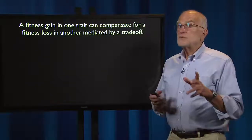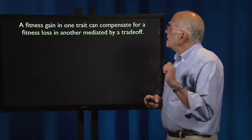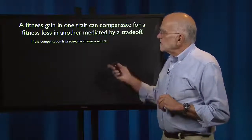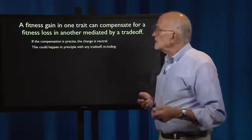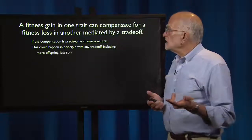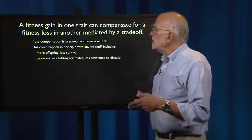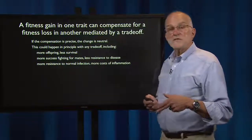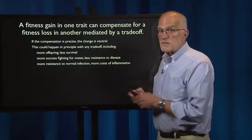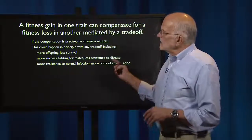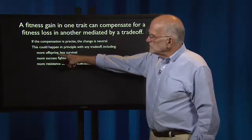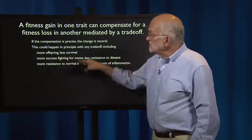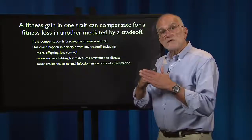Another reason for neutrality is that a fitness gain in one trait can compensate for a fitness loss in another if those traits are connected by a trade-off. If the compensation is precise, change will be neutral. This could happen with any trade-off, including more offspring vs. less survival, more success fighting for mates vs. less resistance to disease, or more resistance to normal infection vs. greater costs of inflammation — all trade-offs with medical relevance. If compensation is precise, individuals with very different trait values could have the same reproductive success.